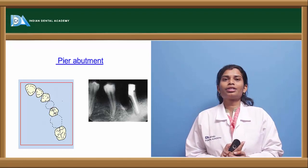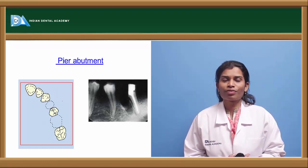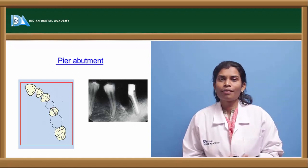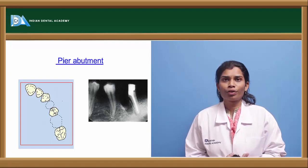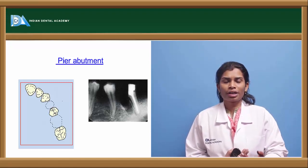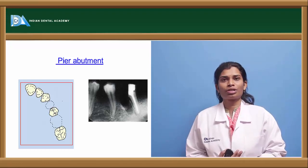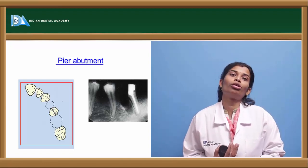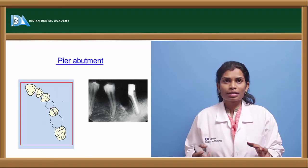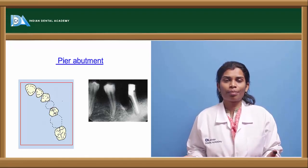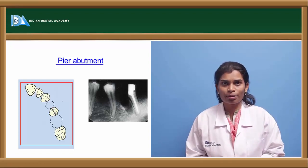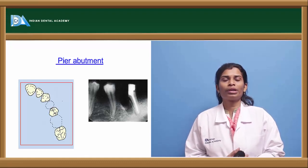The non-rigid connector is critical in pier abutment cases due to the differential movement of teeth. Anterior teeth exhibit approximately 50 microns of buccolingual movement during function, while posterior teeth may move up to 108 microns. This differential movement and intrusion differences can cause micro-leakage at the terminal abutments. To prevent these complications from the complexity of forces in a pier abutment, a non-rigid connector is mandatory.